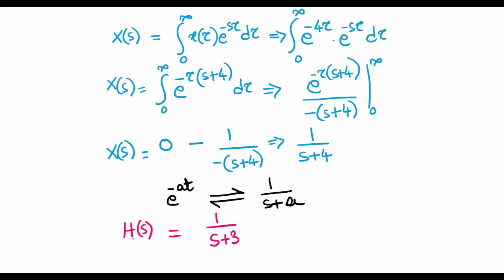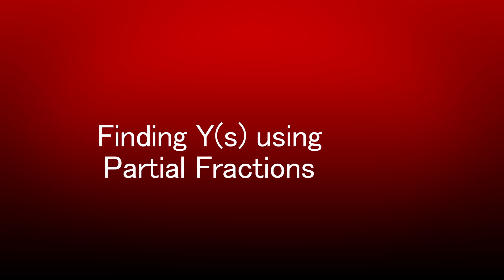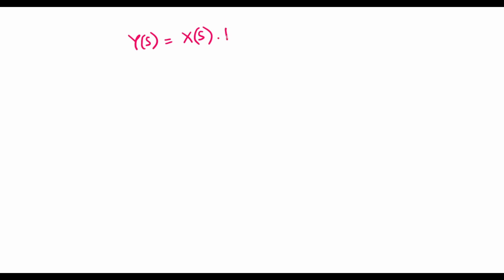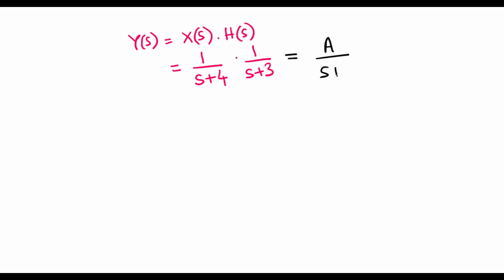Now that I have X(s) and H(s) I can multiply the two and get the response Y(s). So Y(s) is simply the multiplication of X(s) and H(s): X(s) is 1/(s+4) and H(s) is 1/(s+3), giving Y(s) = 1/[(s+4)(s+3)]. We will use partial fraction expansion to write this in the form a/(s+4) + b/(s+3), and we will find out the coefficients a and b.